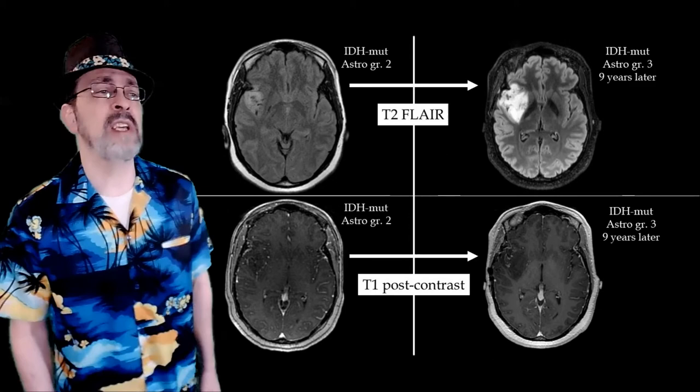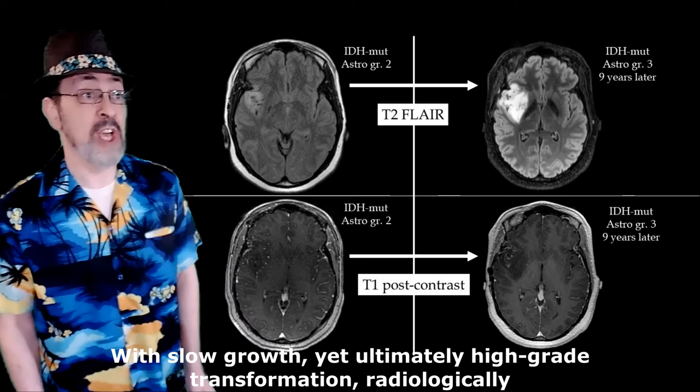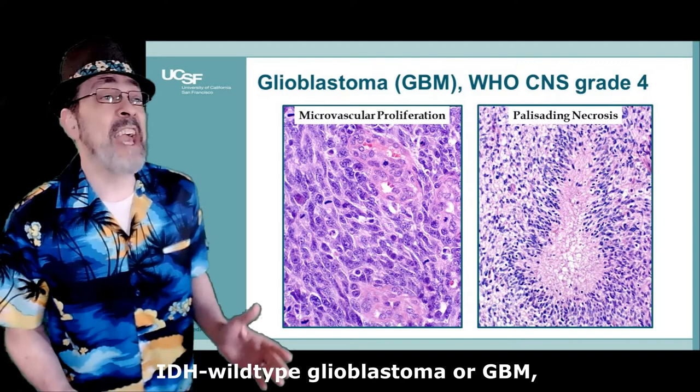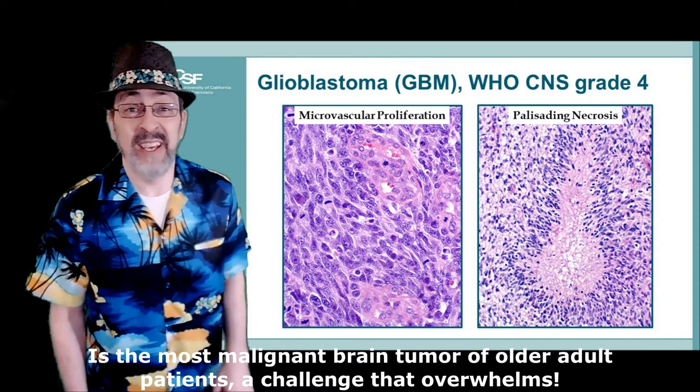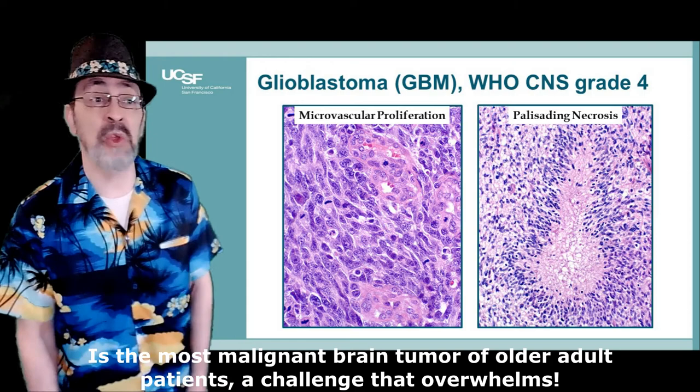IDH mutant tumors are much better prognostically, with slow growth yet ultimately high-grade transformation radiologically. IDH wild-type glioblastoma, or GBM, is the most malignant brain tumor of older adult patients, a challenge that overwhelms.